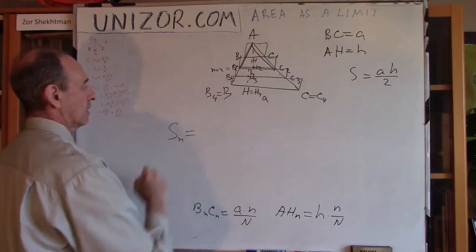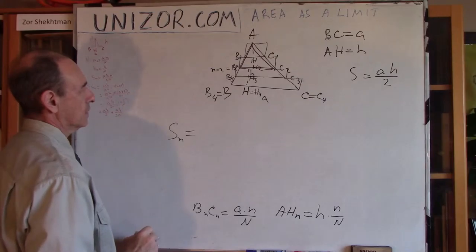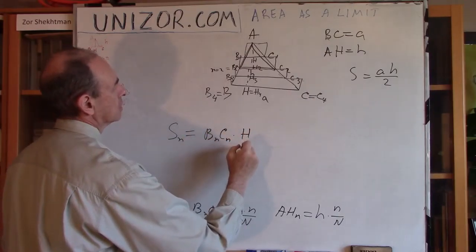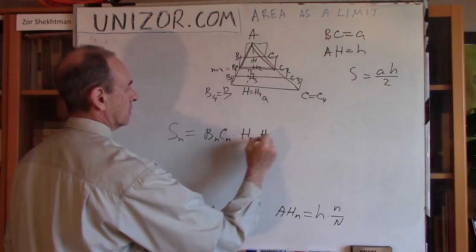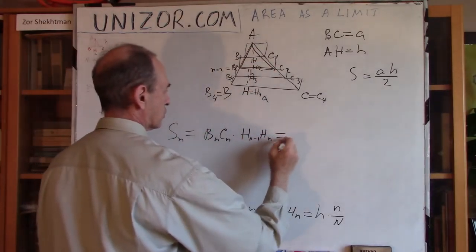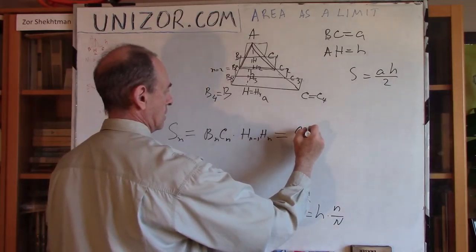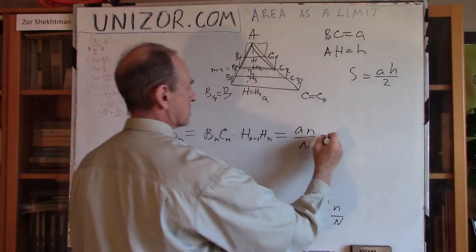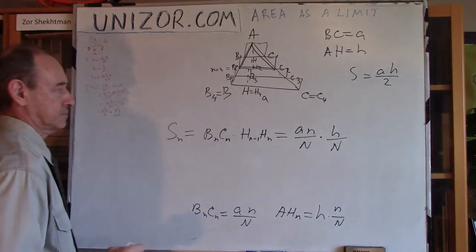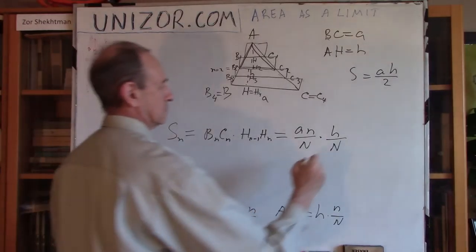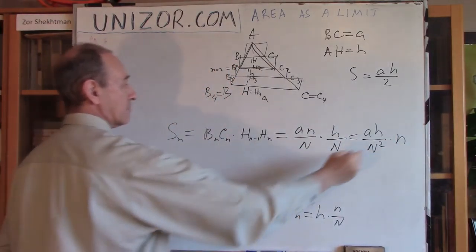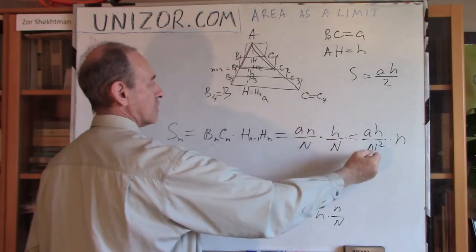So the area, which is Sn there, Sn, is equal to BNCN times HN minus HN-1, right? This is from HN-1 to HN, and this is from BN to CN, which is equal to, now this we know, A n over N. And this is H divided by capital N, right? AH over N squared times n. n is a variable, that's why I put it separately. A and H and capital N are constants.